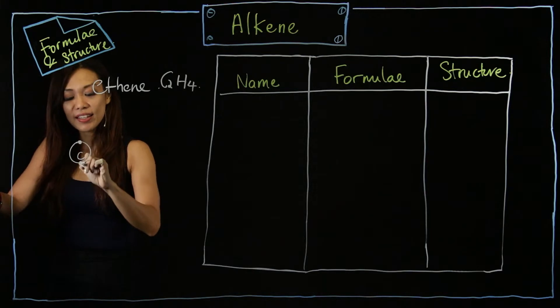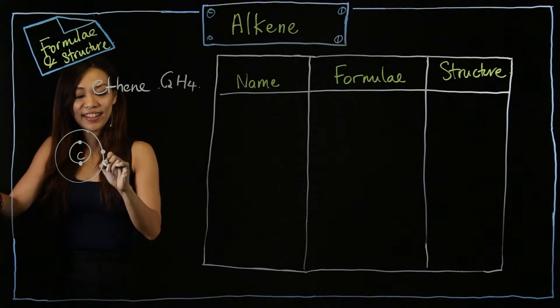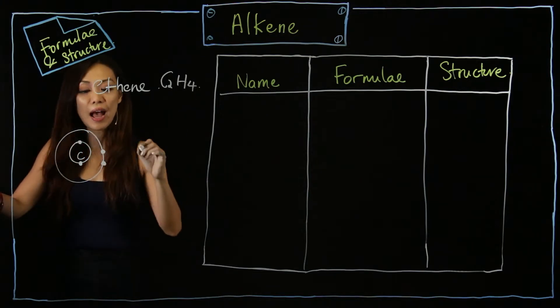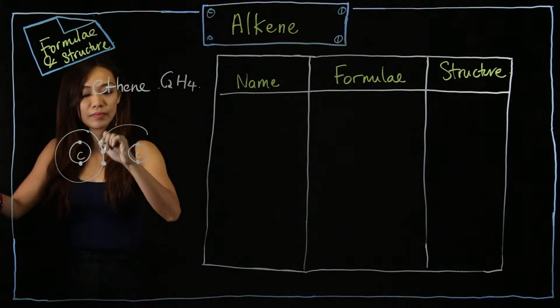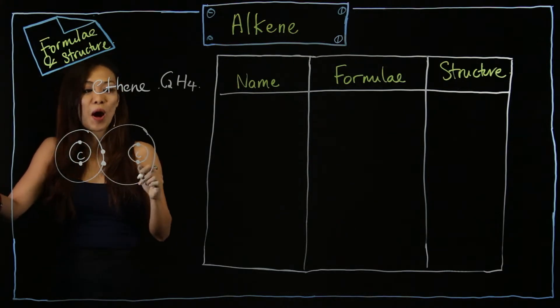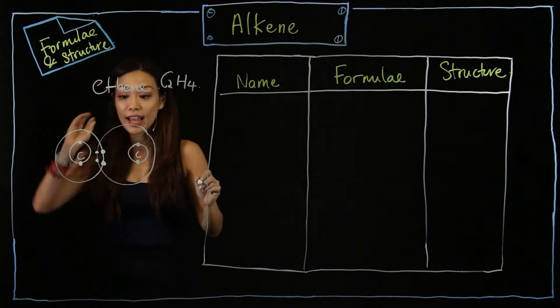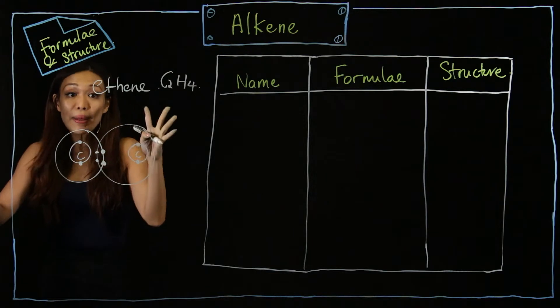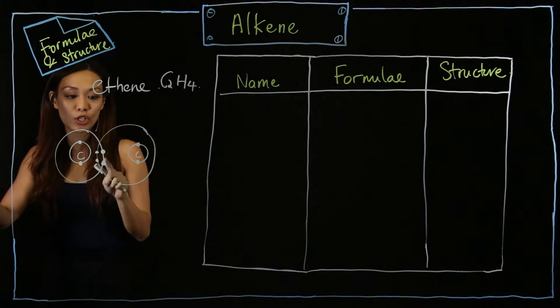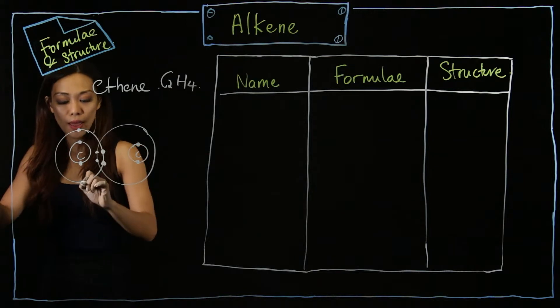Share with another carbon. Now, because it's C2H4, carbon itself has four electrons at the outer shell. Here we have two, I have two more to go, so I put one here and one here.